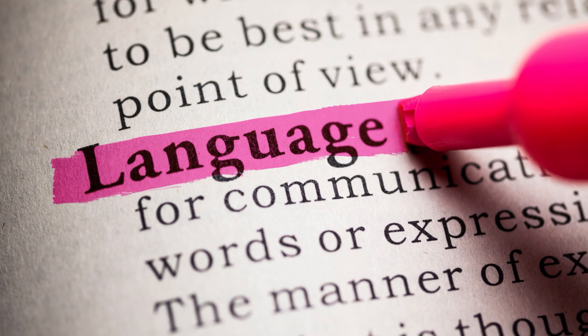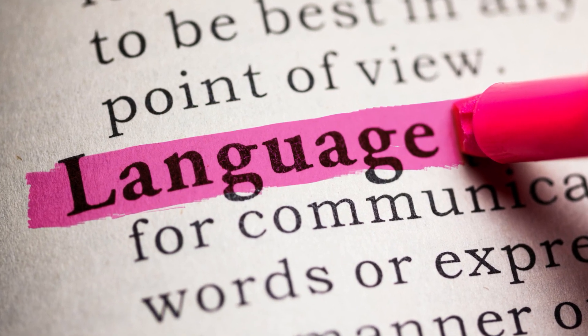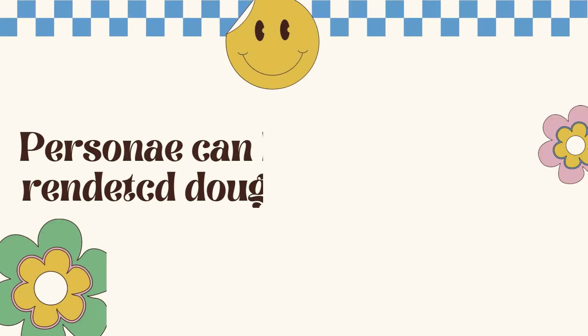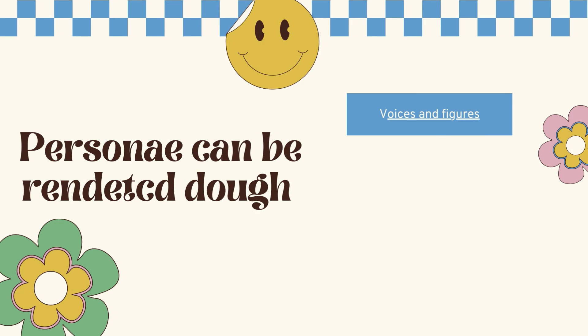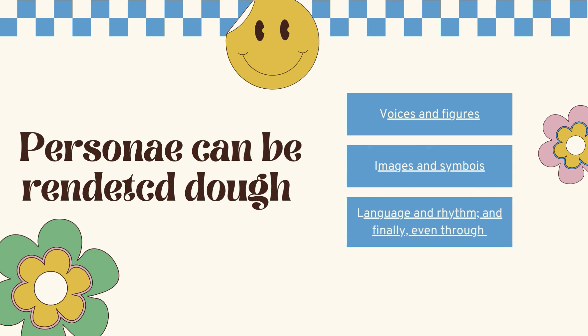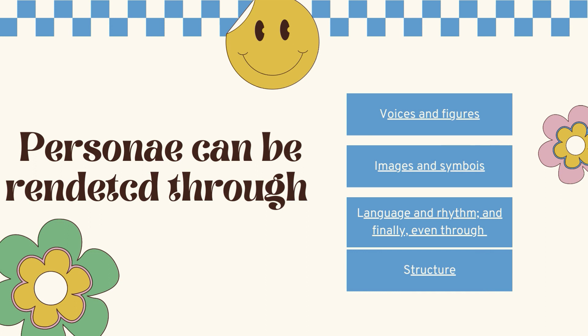We are going to talk about these personae and most importantly how they are put across and become articulate through figures, images, and symbols, and also through the use of language and rhythm. We are also trying to understand what their function is in the writing of a poem. Personae can be rendered through voices and figures, expressed through images and symbols, through language and rhythm, and also through the structure of the poem.